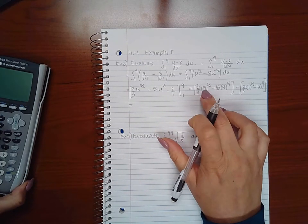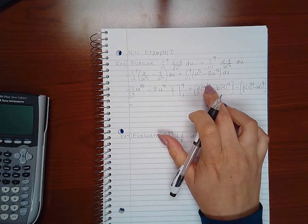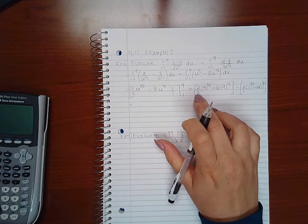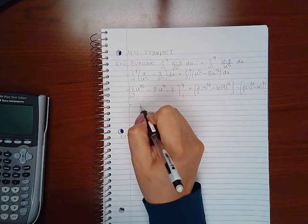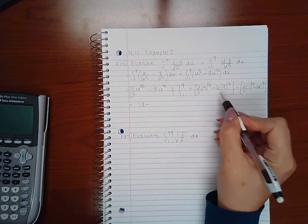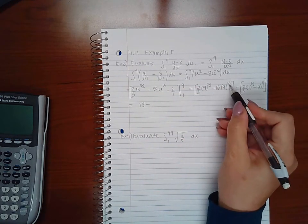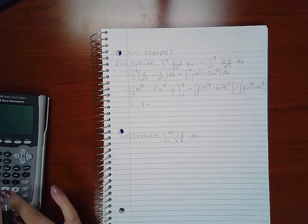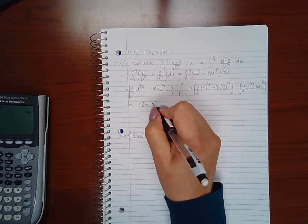So here I get the square root of 9. The square root of 9 is 3. 3 raised to the third power is 27. 27 divided by 3 is 9. And 9 times 2 is 18. Then here I will get the square root of 9, which is 3. 16 times 3 is 48.